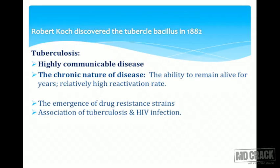Although the tubercle bacillus was discovered almost a century back in 1882 by Robert Koch, till date we are not able to eradicate tuberculosis, mainly because of various properties of the tubercle bacillus itself. Tuberculosis is a highly communicable, chronic disease — it does not develop within two or three days. It takes months or years to establish.